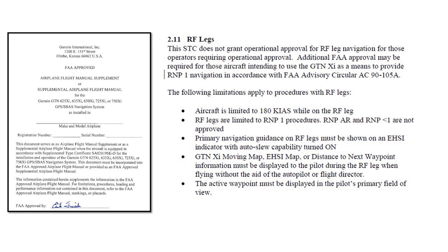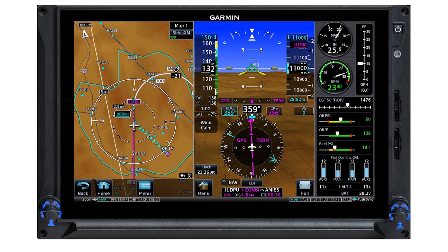The supplement for the GTN series notes that you can fly an RF leg that's part of a procedure if you don't fly faster than 180 knots indicated airspeed, the RF leg is defined to the RNP-1 standard — that is, one nautical mile either side of the centerline of the arc — you have an electronic HSI that auto-slews as you fly around the arc, if you hand-fly the RF leg you must use a moving map to help you maintain the track, and the active leg must be prominently displayed, as on a PFD. The equipment for flying an RF leg looks something like this; other combinations of electronic displays also may meet the requirements.